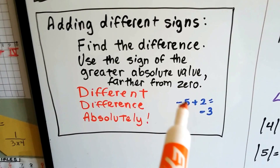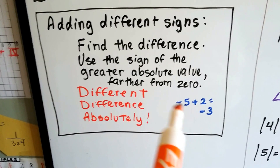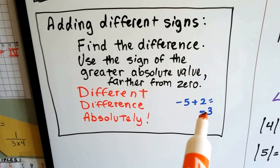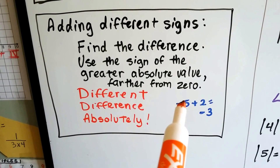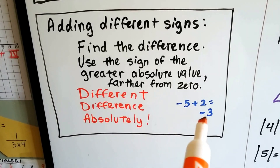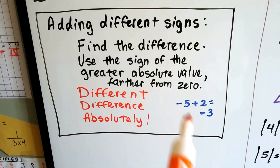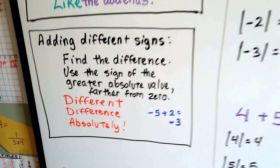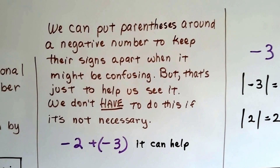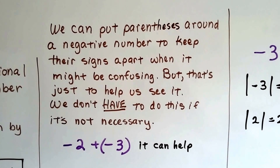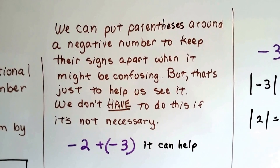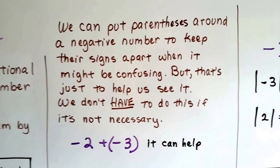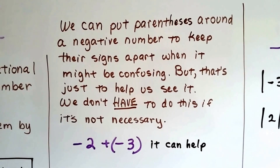We found the difference between the two numbers and then gave the answer the sign of the larger absolute value — so we get negative 3. We can put parentheses around a negative number to keep the signs apart when it might be confusing, but that's just to help us see it. We don't have to do this; it's not necessary.